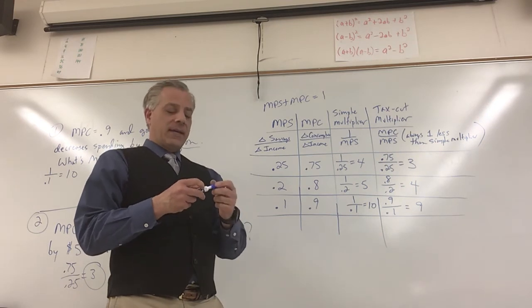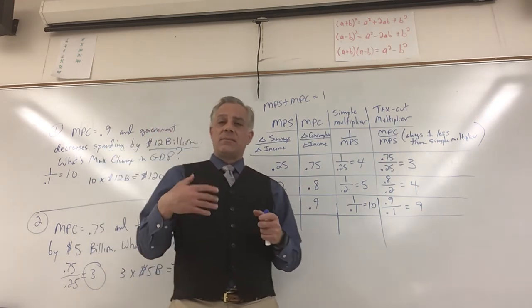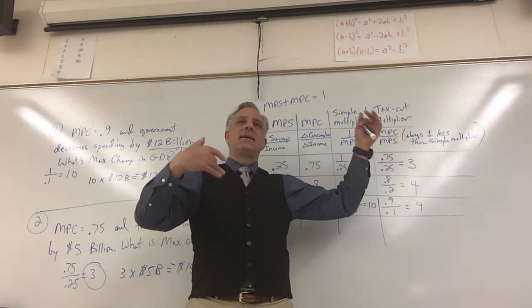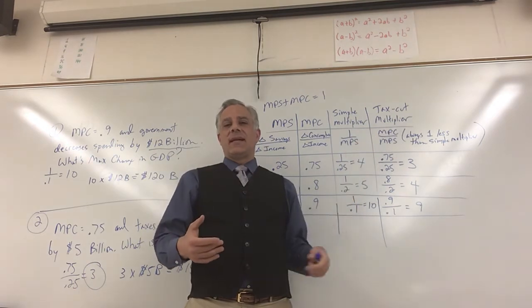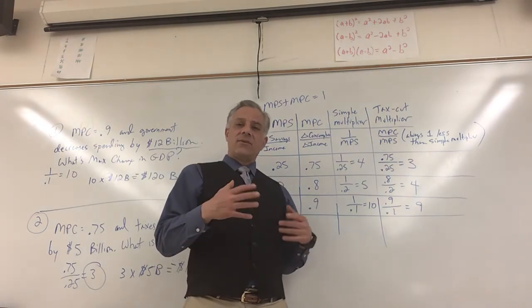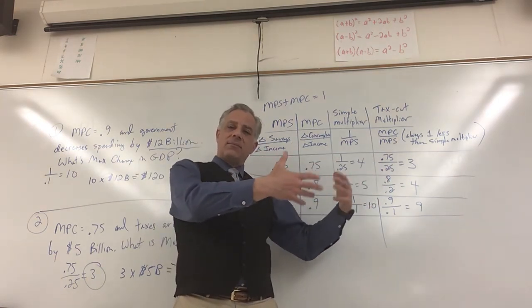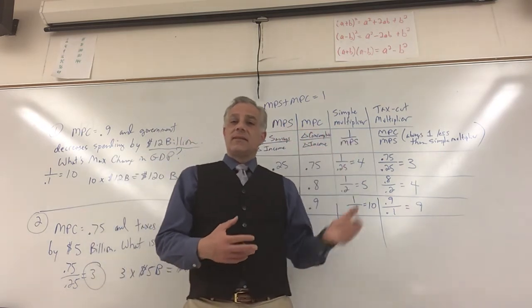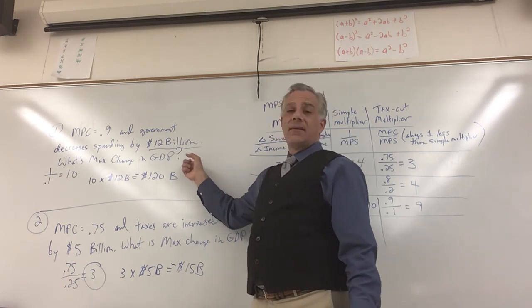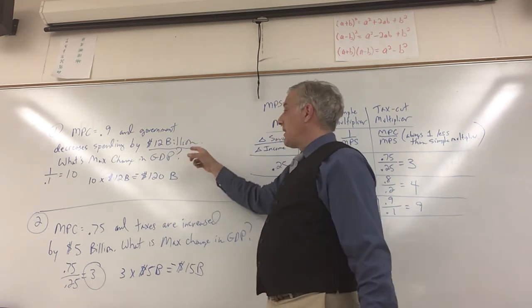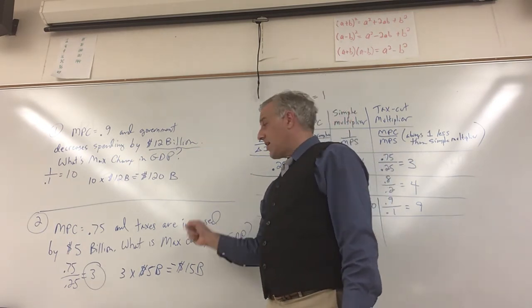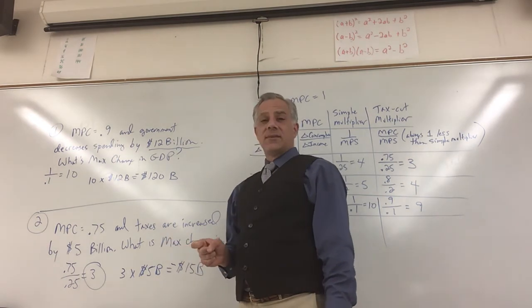You know, the tax cut multiplier is different than the simple spending multiplier. Also, don't be thrown off by fancy verbiage. You know, tax revenues are increased by 4 billion dollars. That means taxes have been increased. There could be an increase in military spending of blah, blah, blah. There could also be an increase in consumption. Or investment or anything else that, unless there's taxes involved, I use this multiplier, the simple multiplier, if there's a change in GDP. If we talk about taxes, then you go to this one.